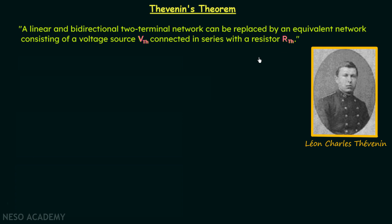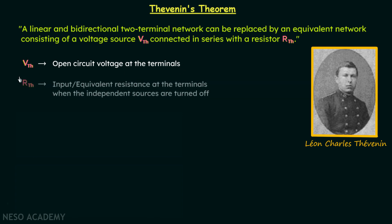You can appreciate the simplicity this theorem provides. VTH, known as Thevenin's voltage, is the open circuit voltage at the terminals. RTH, known as Thevenin's resistance, is the input or equivalent resistance at the terminals when the independent sources are turned off. We will understand how to calculate VTH and RTH by taking one example.